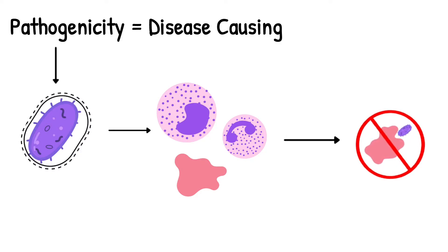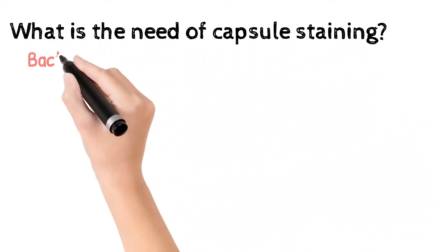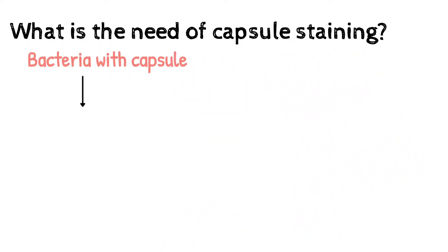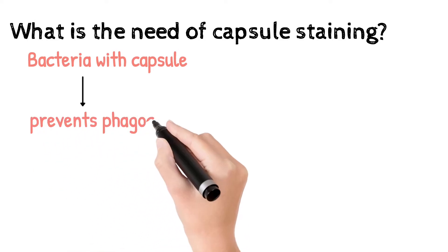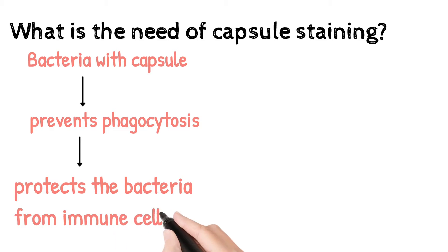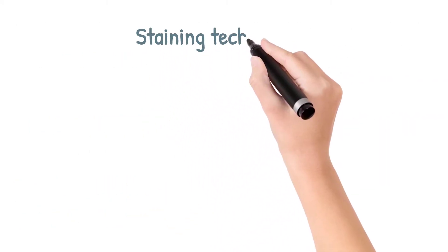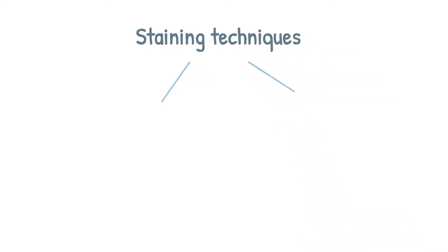Now, why is capsule staining required? As we have seen, capsule prevents phagocytosis. Capsule prevents immune cells from engulfing bacteria, which leads to severe infection. Hence, capsule staining is an important diagnostic tool. Now that we know what capsule is and the need for capsule staining, let's move on to staining techniques.